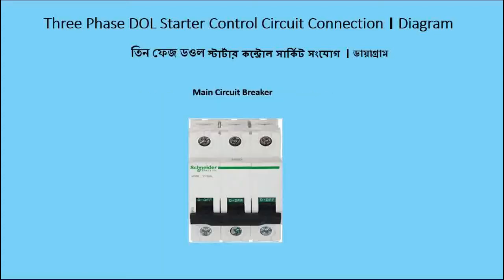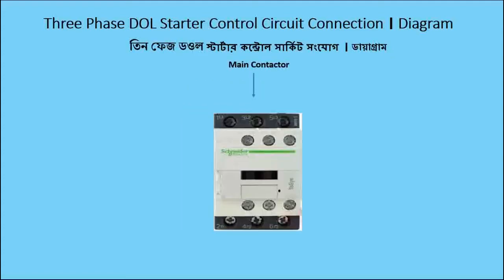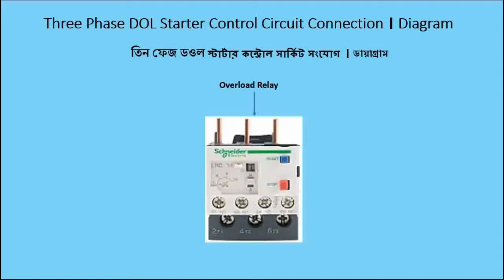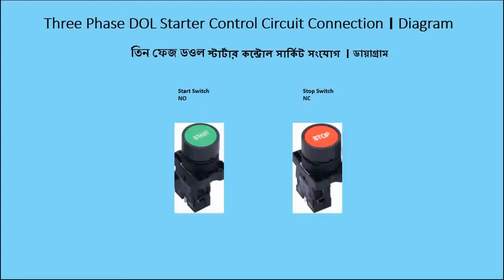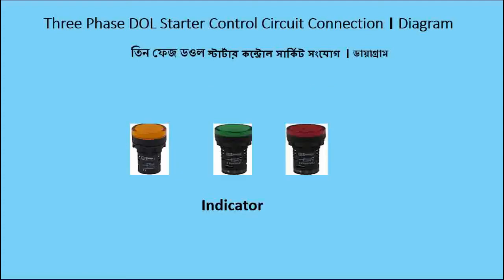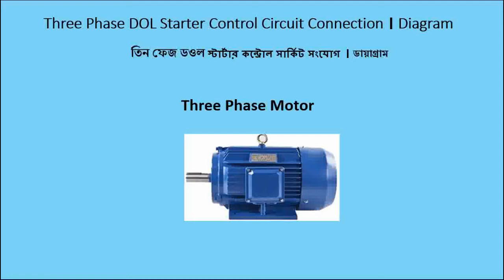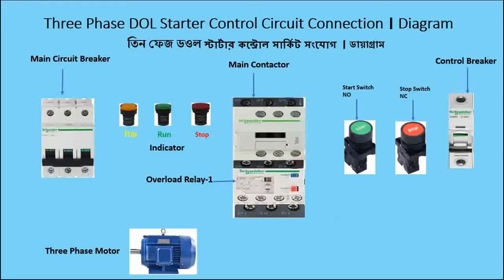This is the main circuit breaker — three-phase. This is the main contactor, the overload relay, and the control breaker. There are two switches — NO used for start and NC for stop. The three indicators: red means stop, green is run, and yellow is for trip. And this is the three-phase motor.